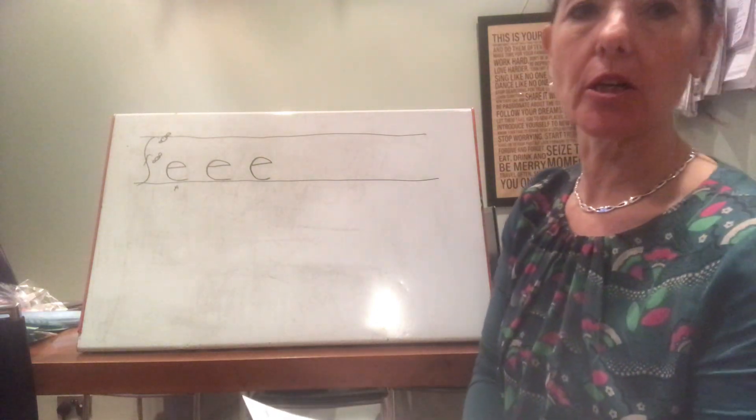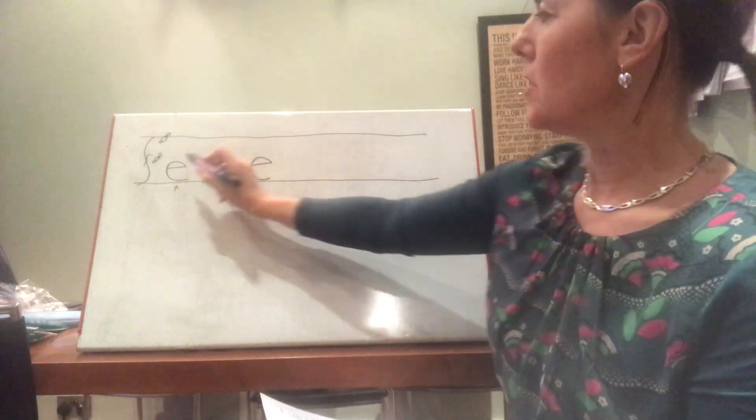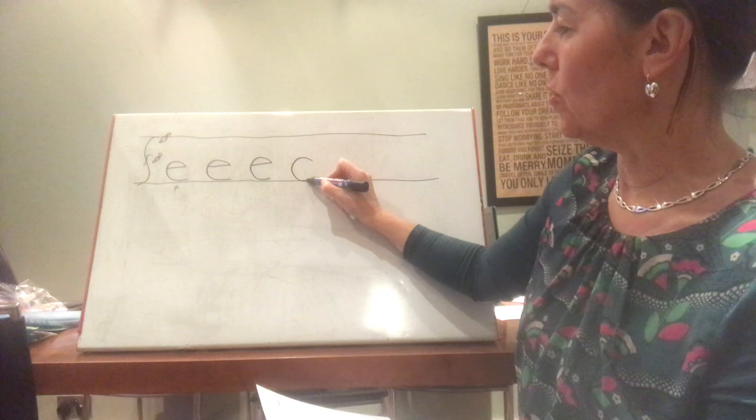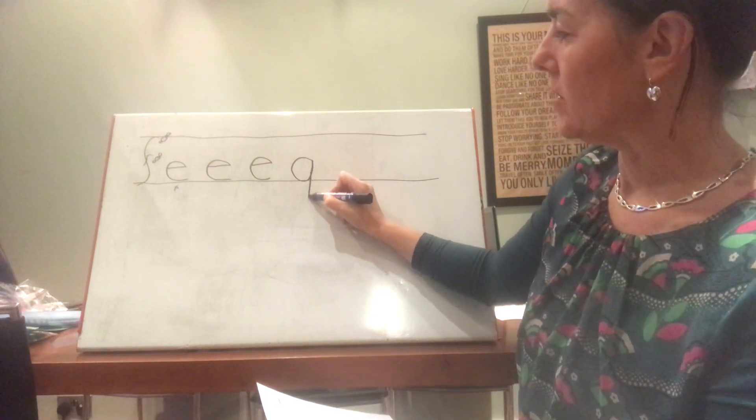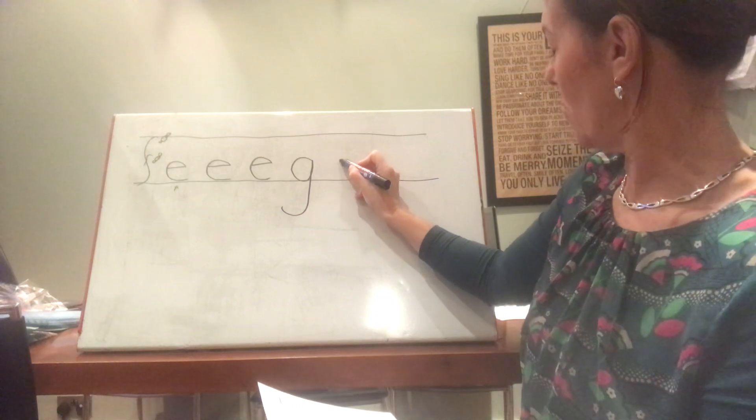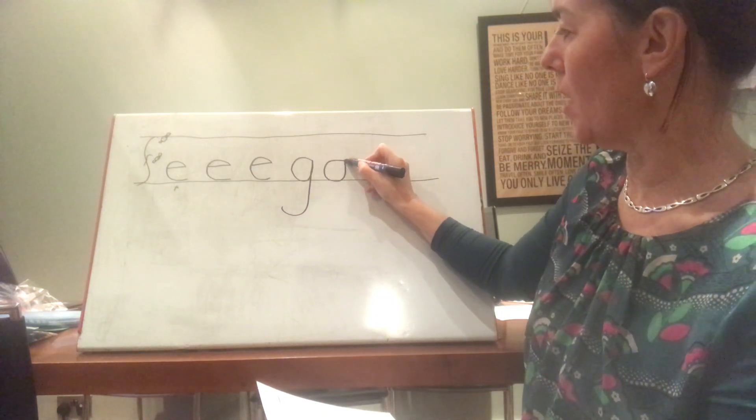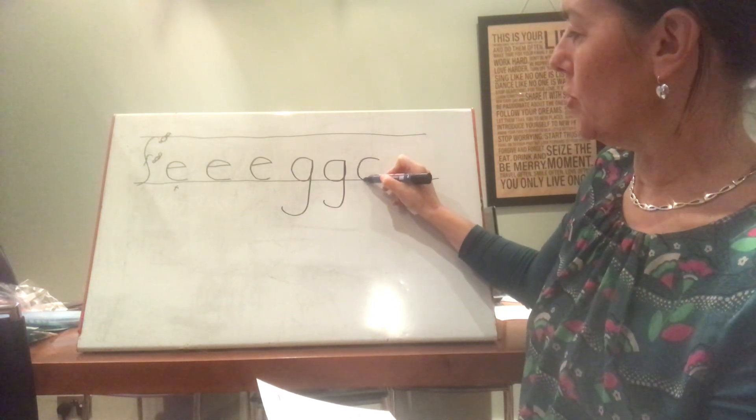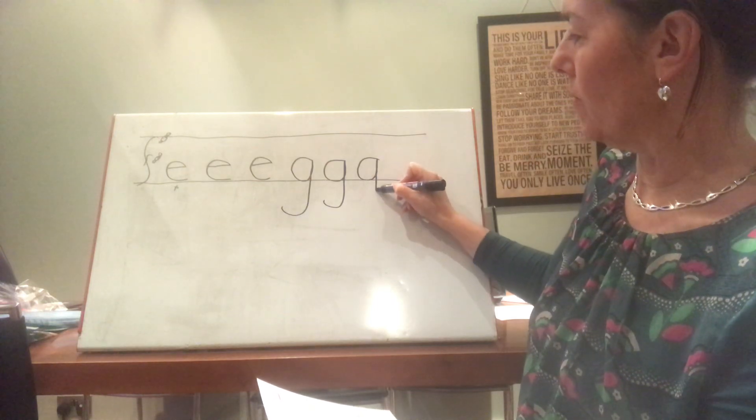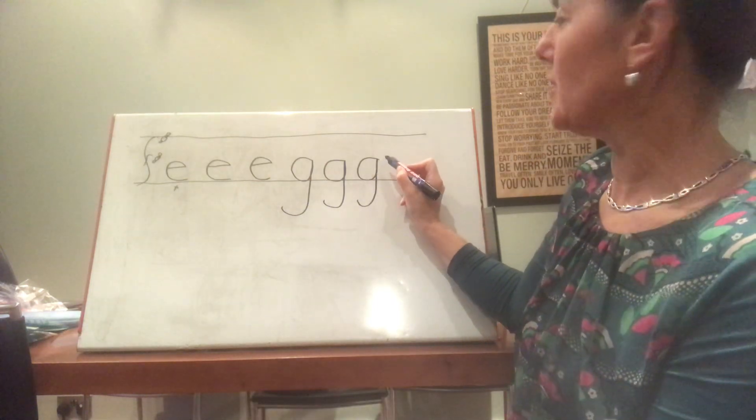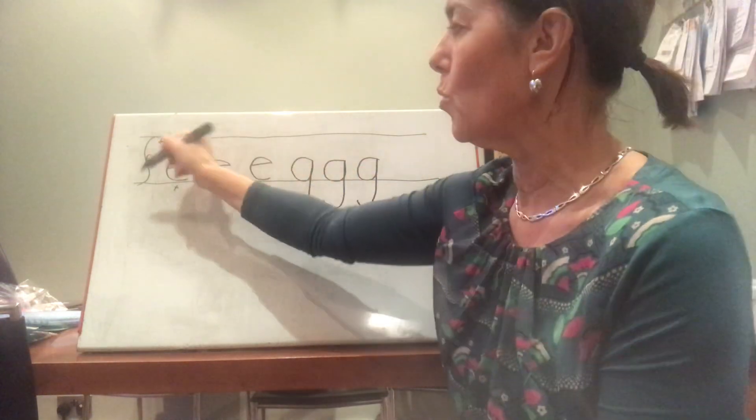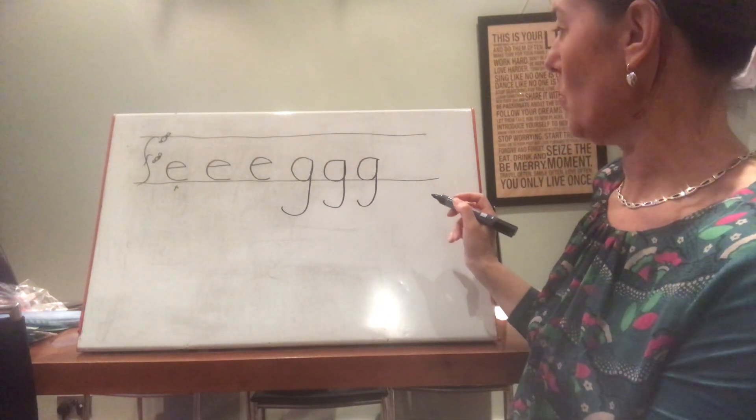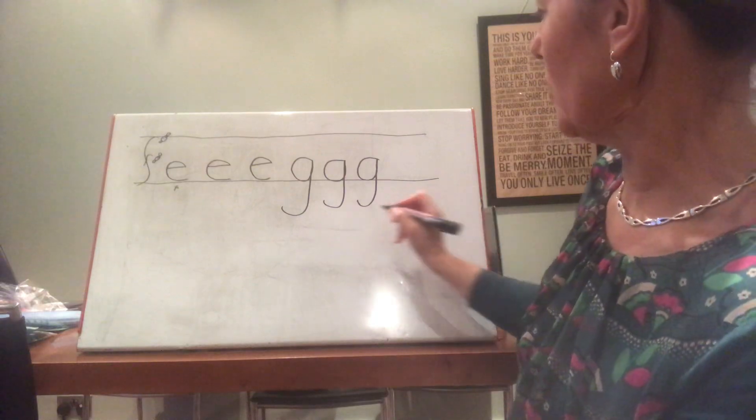OK, the next one we're going to practice is a G. So for a G, you start at scared monkey. You pull around, push along the floor. Up, down, down, round. Once more. Pull around, push along the floor. Up, down, down, round. Once more. Pull around, push along the floor. Up, down, down, round. With all the letters when we pull around, we're pulling around and we're going towards the monkeys and the trees. We always go anti-clockwise that way. OK, I'll give you a minute and then you can choose your best one.